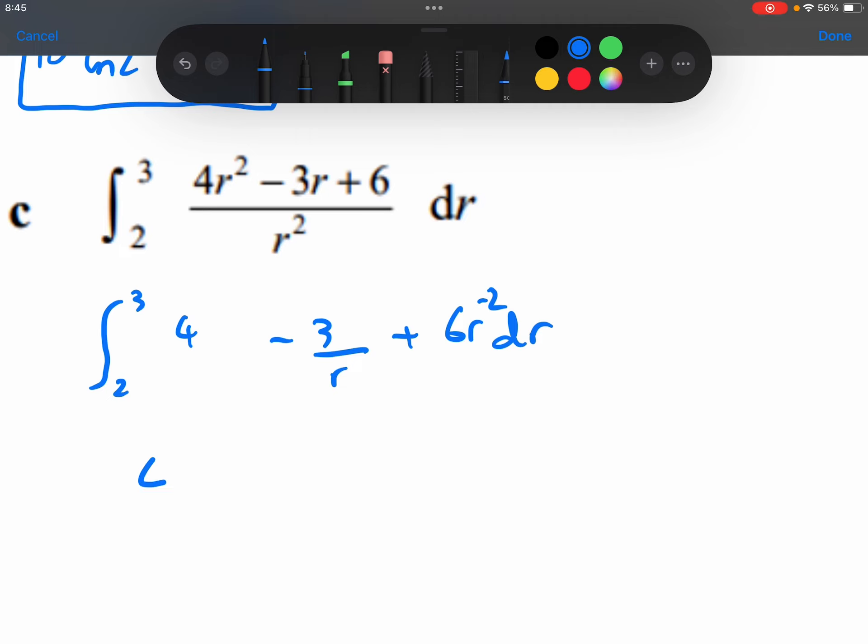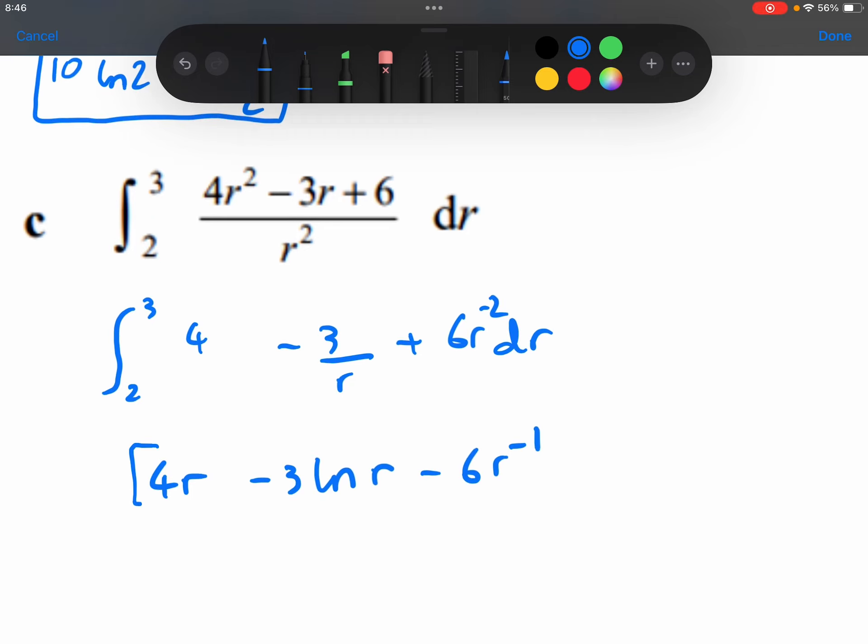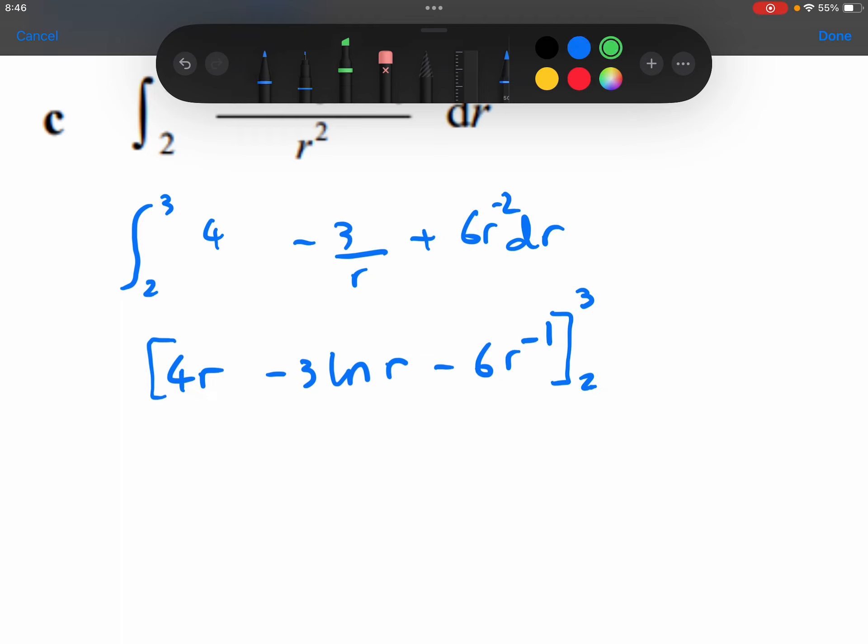The 4 will integrate to be 4r. The minus 3 over r will integrate to be minus 3 ln r. And the 6r to the minus 2 will add 1 to the power and divide by the new power. So that 6 is going to become a minus 6. Substituting these limits in. Before I do that, I'm just going to put this r to the minus 1. I'm going to put that back on the denominator because I find it easier to substitute in then.